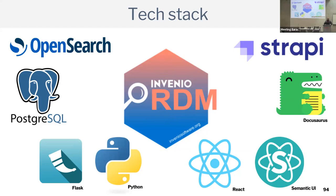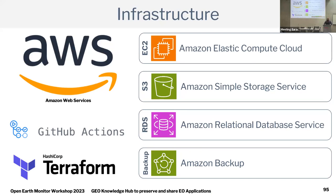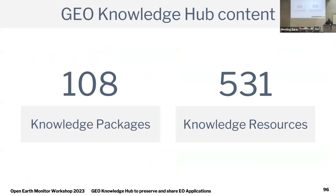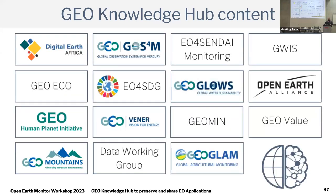Our tech stack is also open. For our search index we use OpenSearch, we have PostgreSQL, and the core of the GeoKnowledgeHub is InvenioRDM — an open source tool created by a community led by CERN, which provides a mature set of features we use as our base. In a couple of weeks, InvenioRDM will also be the new base for Zenodo. For infrastructure we use AWS — EC2 machines, S3 buckets, RDS databases — managed with Amazon Backup, GitHub Actions for automated deploys, and Terraform for infrastructure as code.